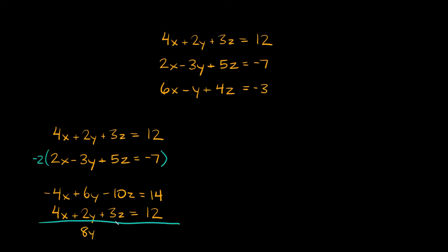Negative 10 plus 3 equals negative 7z, and that equals 14 plus 12, which is 26. So that's the first step — taking two equations and eliminating one of the variables. Now we're going to use the third equation, and we can use it with either one of these two. Let's just use the second one.